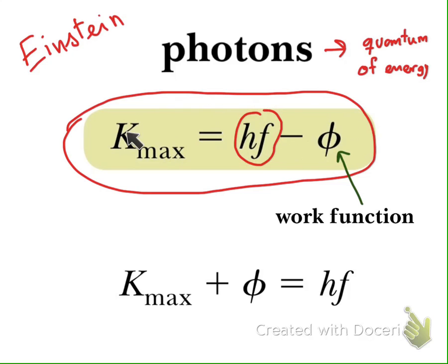From this equation, Einstein can explain all experimental results. This equation tells us that the energy of the photon equals the kinetic energy of the electron plus the work function. The key point is that light transmits energy in a discrete way — not continuously — and we call this quantum of energy the photon.